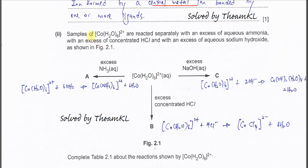So now this complex ion, the cobalt complex ion reacts separately with ammonia in excess, HCl in excess and sodium hydroxide in excess. And it forms different compounds.